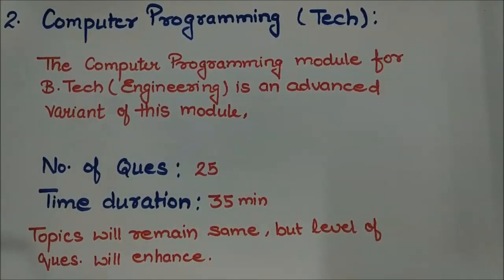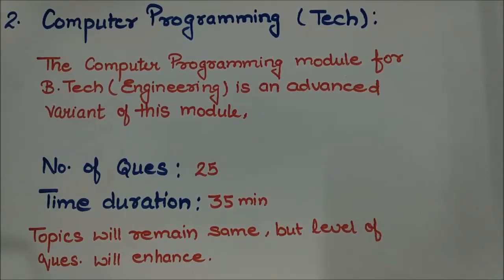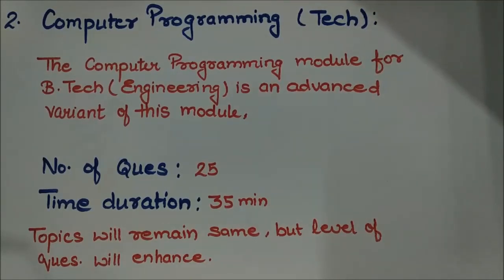The second step is computer programming for BTEC or engineering, which is an advanced variant of this module based on technical knowledge. Here you will get 25 questions and the time duration will be 35 minutes. The topics will remain the same as in the general test computer programming section, but the level of questions will be enhanced.